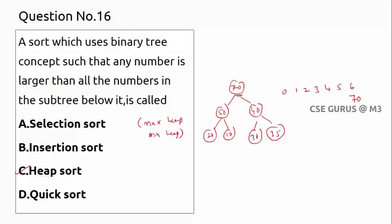After deleting 70 (placed into the array), the last element 35 replaces the root. Now check: among 35, 40, and 50, the highest is 50, so 50 moves up and 35 goes down. Then check 35 against its children 20 and 10 — it is greater, so no swap needed. The next highest element extracted is 50.